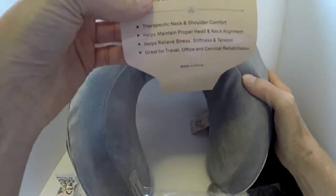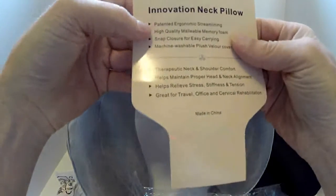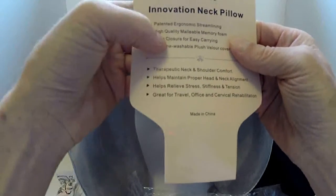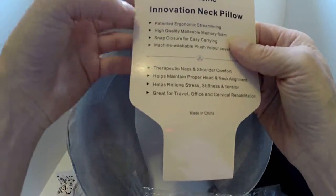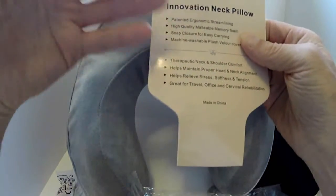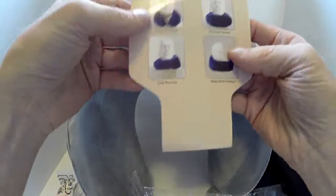This was around the actual pillow but I've already removed it. It basically gives you the machine washable, snap closure for easy carrying. Talks about the memory foam, therapeutic travel, office, stress relief, stiffness relief, tension, things of that nature on the back.